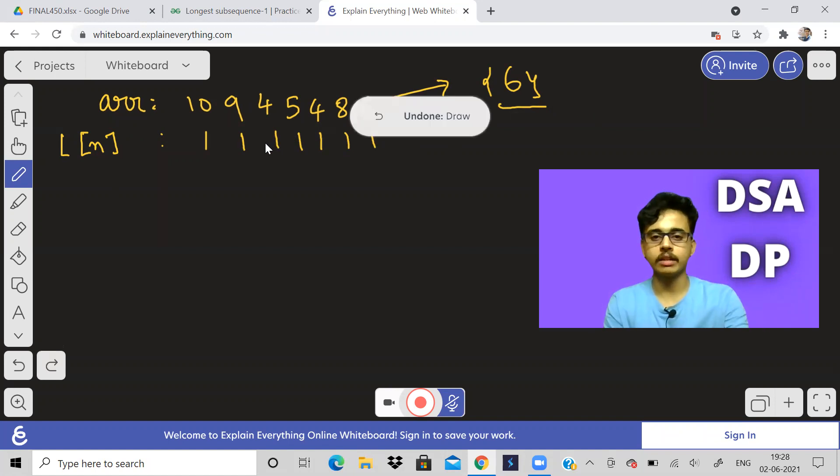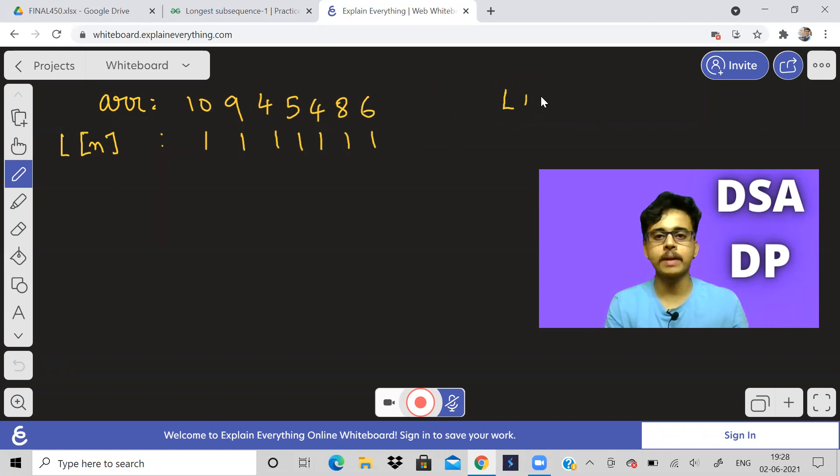So all the values initially are one. This is the same. This step is same as LIS. This is the same step.